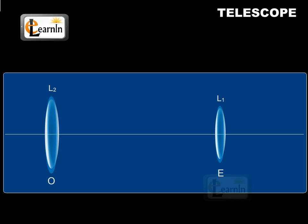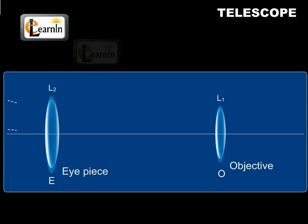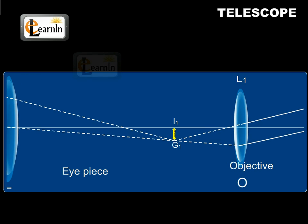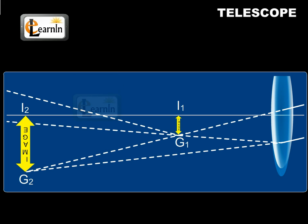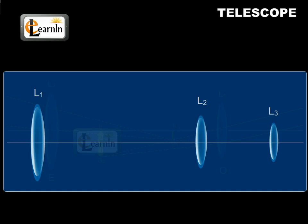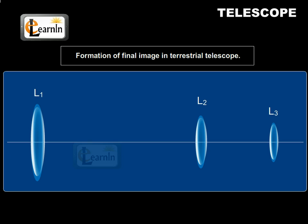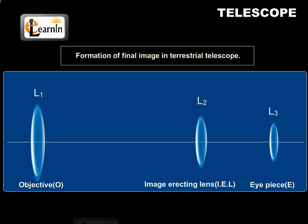This is how the final image is formed in the astronomical telescope. L1 and L2 represent the objective O and eyepiece E respectively. I1G1 represents the first image and I2G2 represents the final image. In the terrestrial telescope, L1, L2, and L3 represent the objective O, eyepiece E, and image erecting lens IEL respectively.